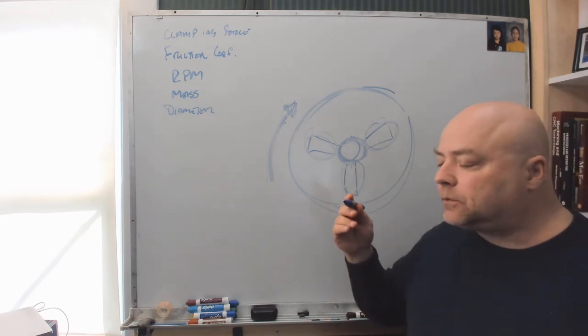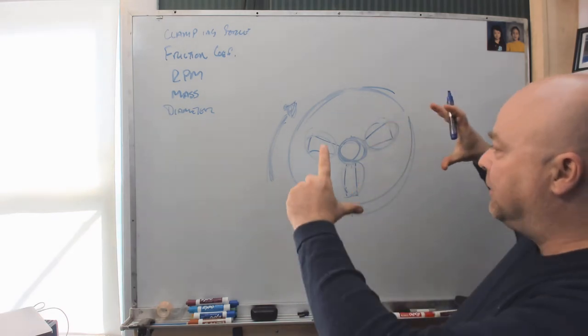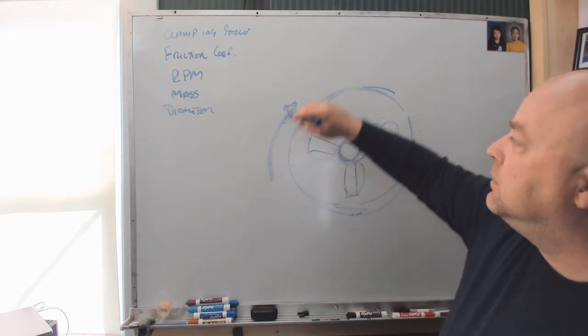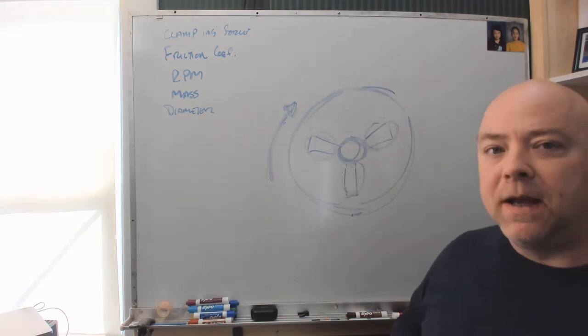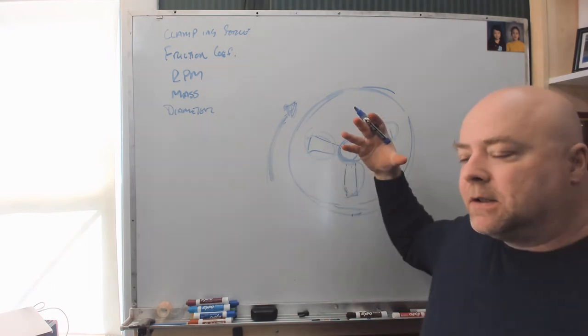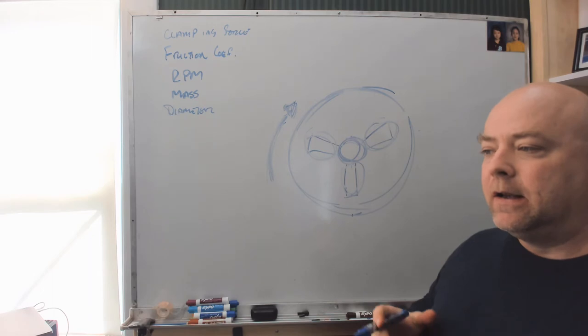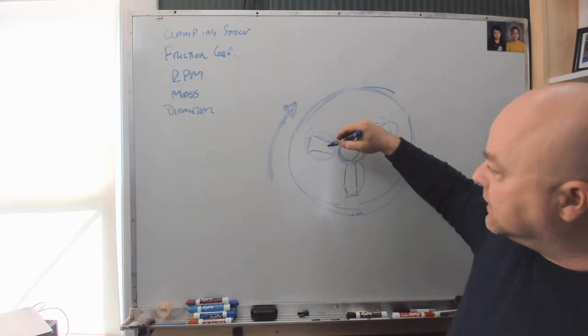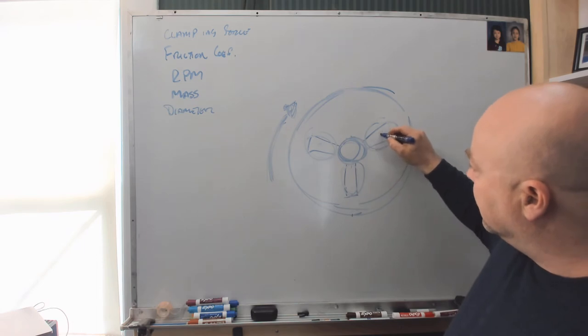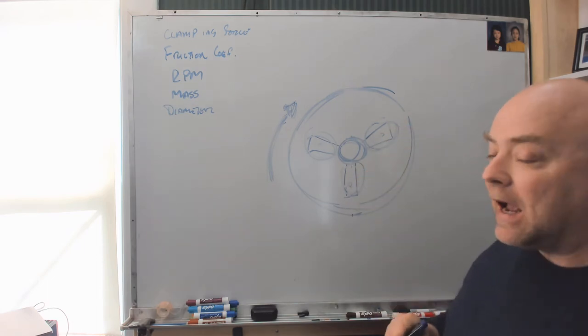We have an applied clamping force from the hydraulic pressure. As soon as the spindle starts to spin, each of the jaws is going to be pulled away from the center with centripetal acceleration, so we need to figure out the centripetal acceleration times the